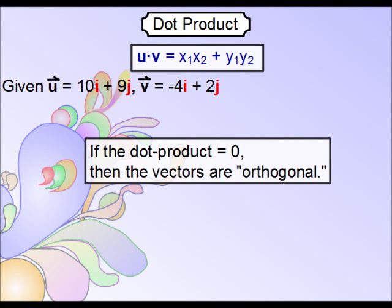It should be noted that if the dot product ends up being zero, then those two vectors are orthogonal. By orthogonal, we mean that they form a 90 degree angle.